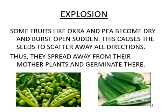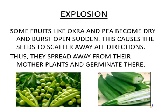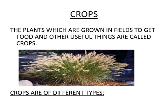Next is dispersal by explosion. Some fruits like arura and pea become dry and burst open suddenly. This causes the seeds to scatter in all directions. They themselves dry and then open suddenly, throwing their seeds by force to other places. So these seeds are also separated from their mother plant and germination takes place elsewhere. We have now learned all the agents of dispersal of seeds.